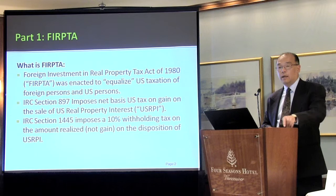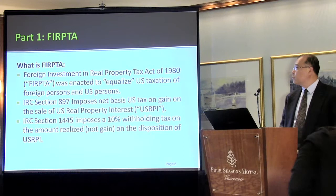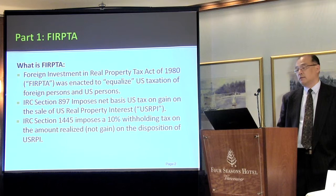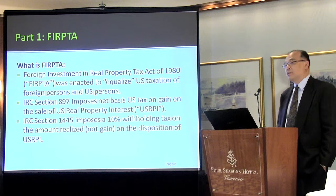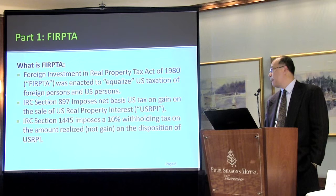FERPTA stands for Foreign Investment in Real Property Tax Act. It came in the 80s basically to equalize the U.S. taxation of foreign persons and U.S. persons. Prior to FERPTA, a foreign person that sells U.S. real estate could actually get out of U.S. tax. So the whole purpose of FERPTA is to impose U.S. tax on the gains on the sale by a foreign person of what is known as U.S. real property interest, U.S. RPI.